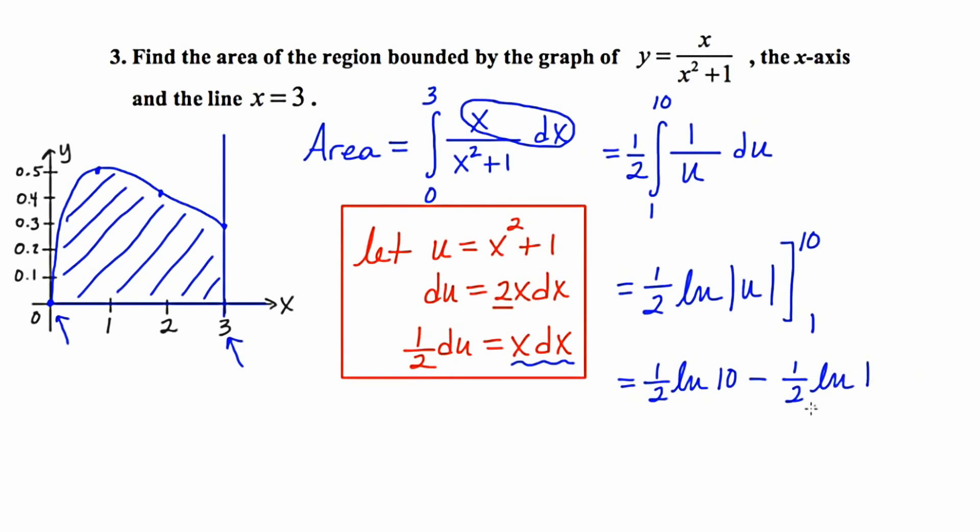Now let's consider the second portion of this statement. We have an implied base here of e. And if we do a quick swing, e to what power is equal to 1? Well, the answer is 0. So what we really have here is 1 half ln 10 minus 0.